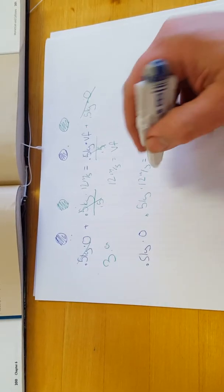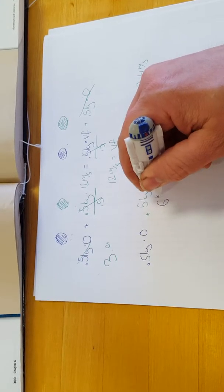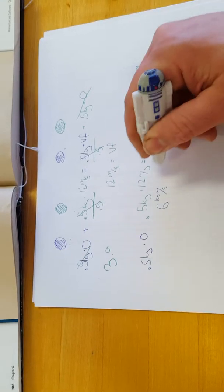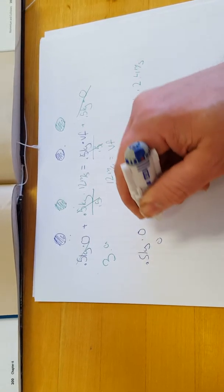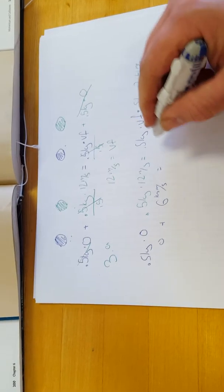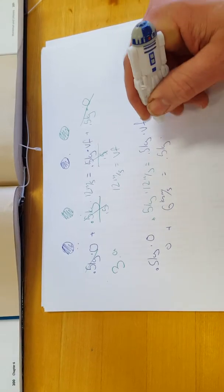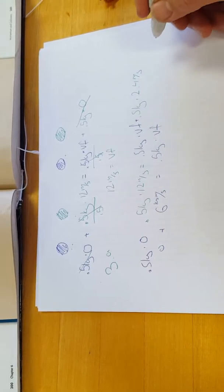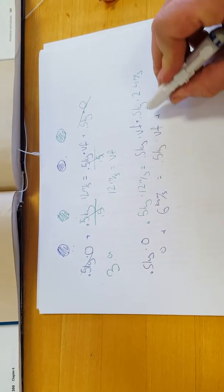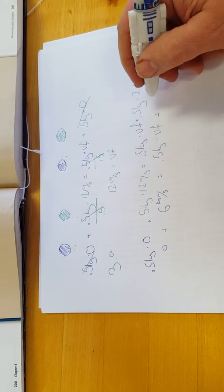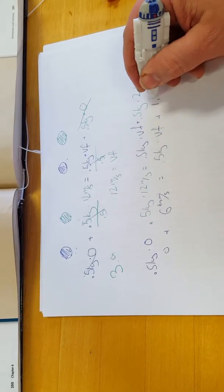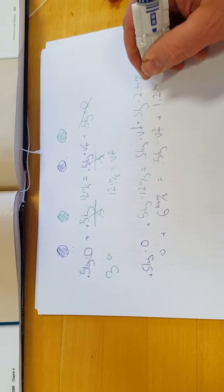So we do a little bit of our math. 0.5 times 12, that's 6 kilogram meters per second is equal to half a kilogram times V final plus half a kilogram times 2.4, well that comes out to 1.2 kilogram meters per second.